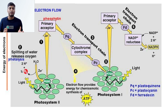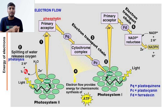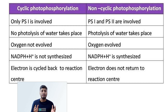The advantages of non-cyclic photophosphorylation are: first, the formation of NADPH₂ — because NADP, the final electron acceptor, gets reduced to NADPH₂ by accepting electrons and the protons released from photolysis of water. Second, the formation of oxygen, which is released and can be used by all living organisms on this planet.